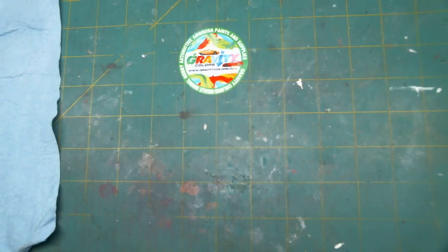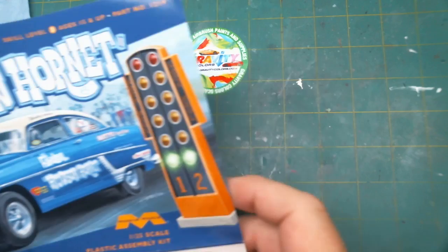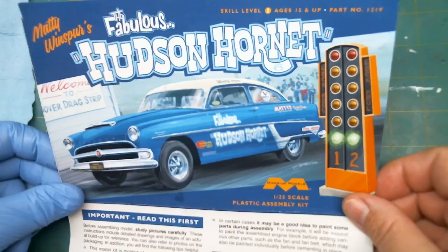How we doing everybody, Matthew back with you. We're going to show you another update here on the paper land, here on the fabulous Hudson Hornet. This is one we're doing for Frank.